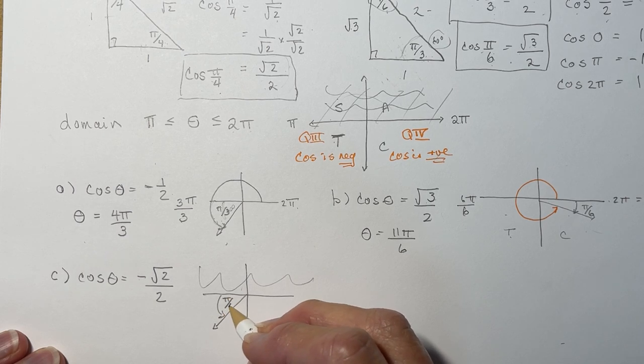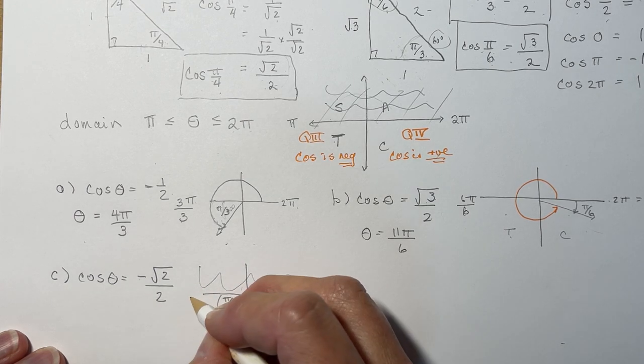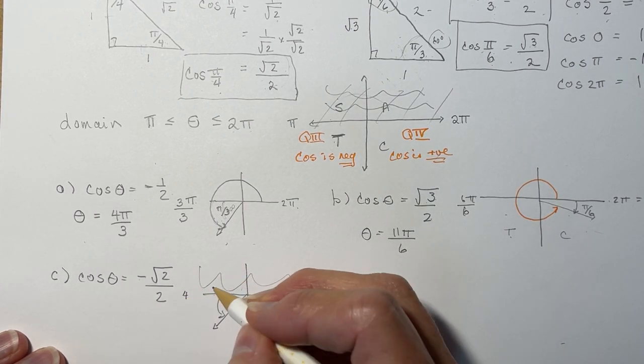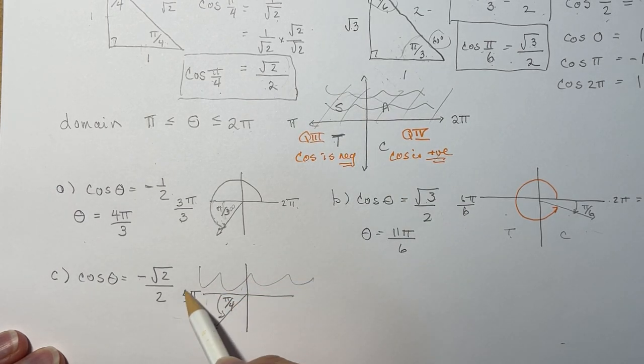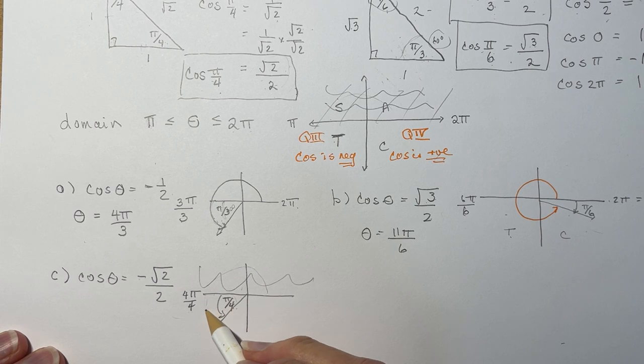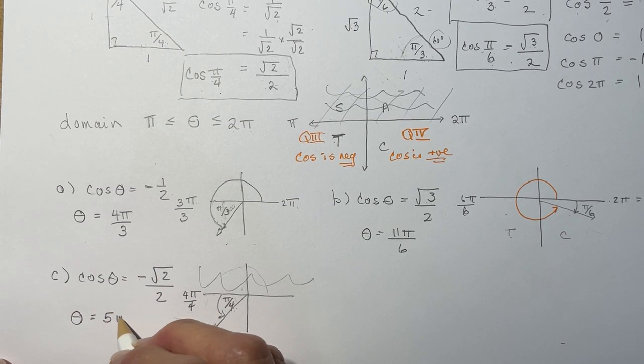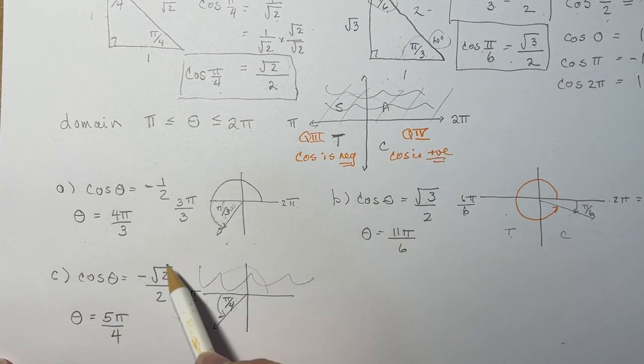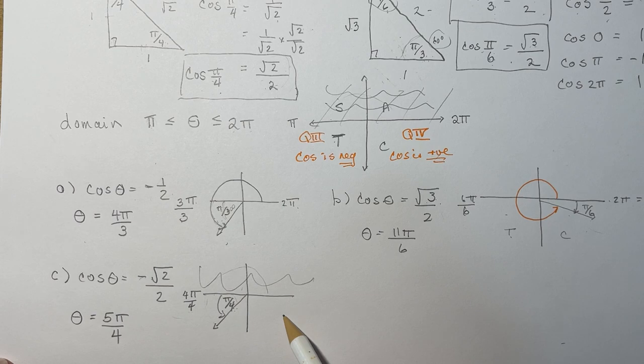So from here to here is pi. Pi is the same as 4 pi over 4. So all I'm doing is changing the denominator here so that I can add this pi over 4. So this is 4 pi over 4 plus pi over 4, so that means theta is going to be 5 pi over 4. So the important thing here is to make sure you're in the right quadrant by looking at the sign of the ratios that they give you. If they're positive, you're going to be in quadrant 4. If they're negative, you're going to be in quadrant 3.